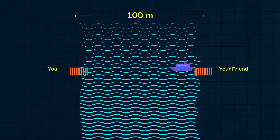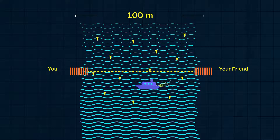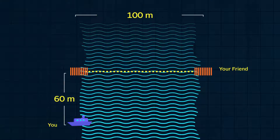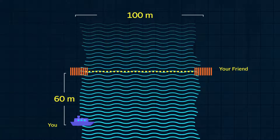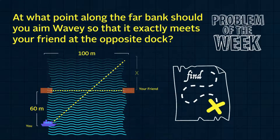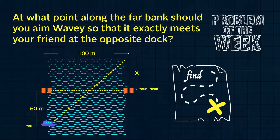You stand on one dock, and your friend stands on another dock exactly across the river with the toy boat Wavy. Your friend points the toy boat at you and places it in the water, but due to the water flow, you need to walk 60 meters downstream to meet the boat where it reaches your bank. Now, instead of walking back to your dock to send the toy boat back, you want to release it from here — 60 meters downstream — but point it so it exactly meets your friend's dock. At what point on the opposite shore should you aim Wavy?